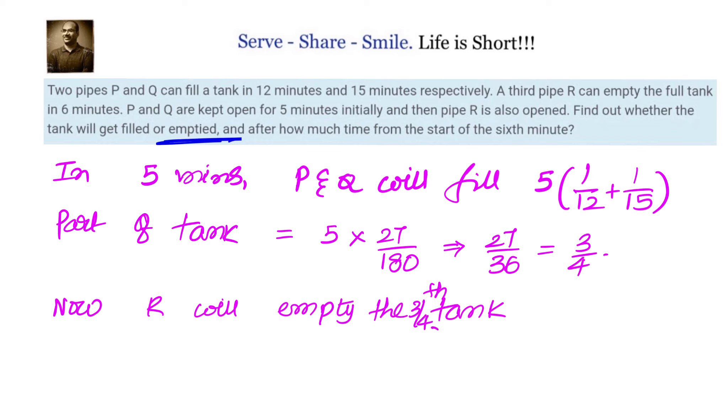Now let us say that R will empty the 3 fourths of the tank which is already filled in X minutes. Now remember P and Q are trying to fill at the same time and R is trying to empty at the same time. P and Q in X minutes will do X into 1 by 12 plus 1 by 15 part of the tank they will fill. And we are putting negative there because we are looking at emptying so filling will become negative. In X minutes R will empty X by 6 part of the tank.